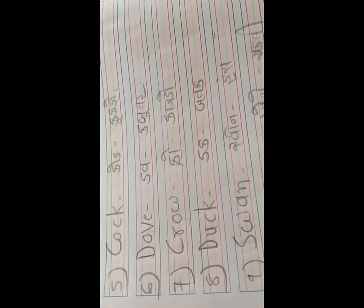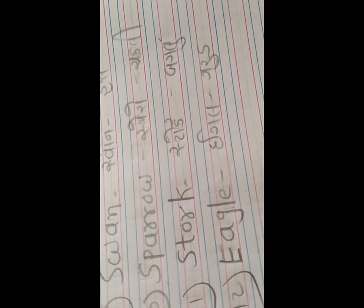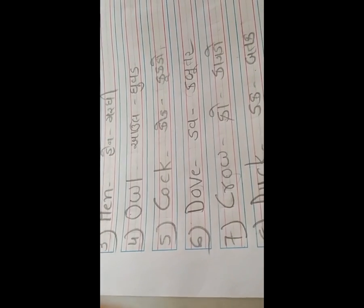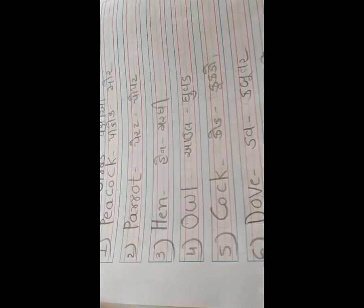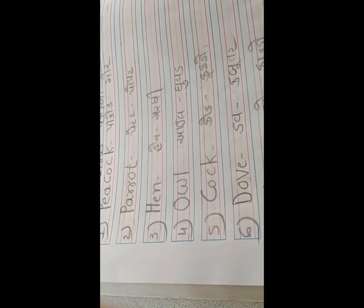પેરટ એટ્લે પોપટ, હેન એટ્લે મરઘી, આઉલ એટ્લે ઘુવડ, કોક એટ્લે કૂકડો, ડવ એટ્લે કબૂતર, ક્રો એટ્લે કાગળો, ડક એટ્લે બતક, સ્વાન એટ્લે હંસ, સ્પેરો એટ્લે ચકલી, સ્ટોર્ક એટ્લે બગલું, ઈગલ એટ્લે ઘોરાડ. બધા વિત્યાર્થી મીત્રો, સરસ! આપણો બડ્સ નો યુનિટ પૂર્ણ થાય છે.